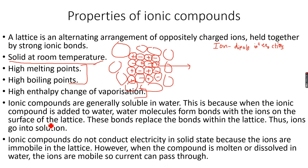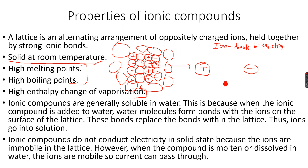Water molecules form ion-dipole interactions with the ions on the surface of the lattice. Because of this, the surface ions have started forming bonds with the water molecules and can no longer form bonds with the ions inside the lattice. The lattice bonds get weakened and replaced by ion-dipole interactions, and as this happens, these ions go into solution as individual ions.